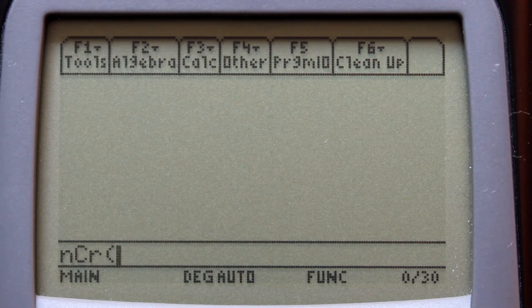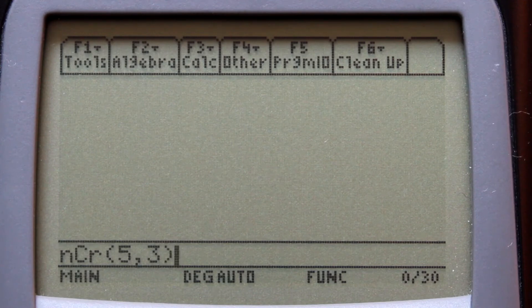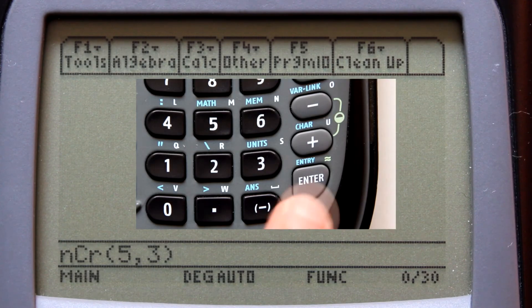Now, on the calculator you will see the combination notation, n-c-r, with the open parenthesis. Enter the n variable, which is 5, enter a comma, and enter the r variable, which is 3. Now put a close parenthesis. To calculate the answer, hit the enter button on the lower right of the calculator.